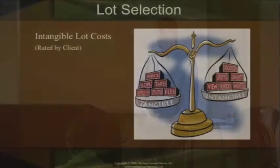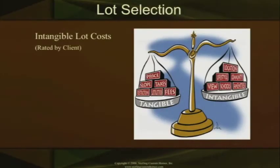Now let's talk about the intangible lot cost. The intangible lot cost is something that we can't really relate money to as either the real estate agent or the builder. It's something the client goes through and says, 'This lot is worth to me another $50,000,' or 'This lot is worth to me another $10,000 because we've got a great view.' And, you know, this view is a $100,000 view to me — that's the way I feel, that's what I've always wanted.